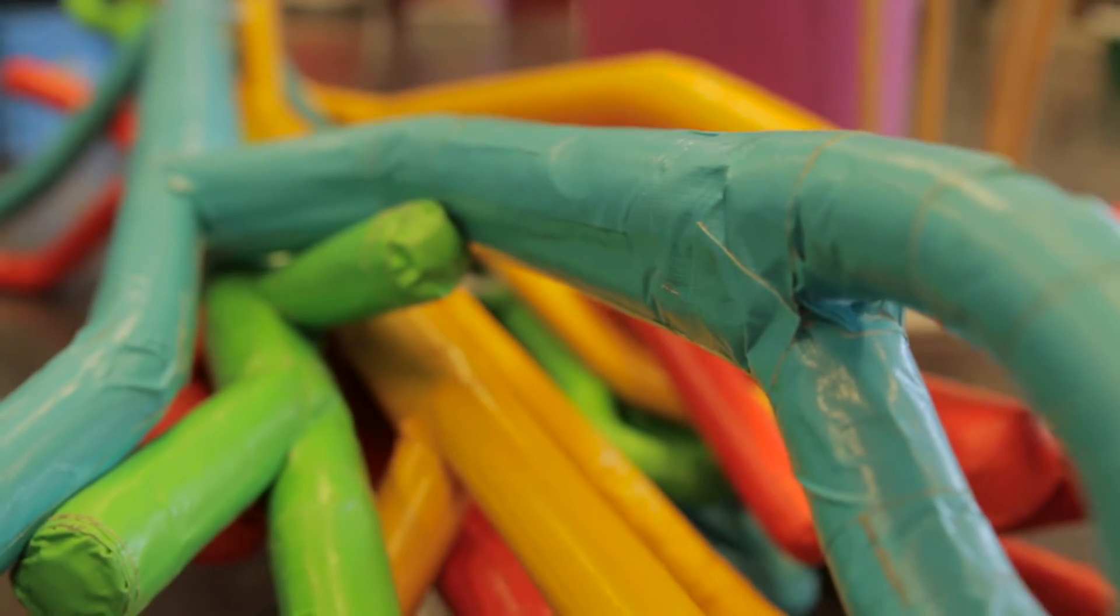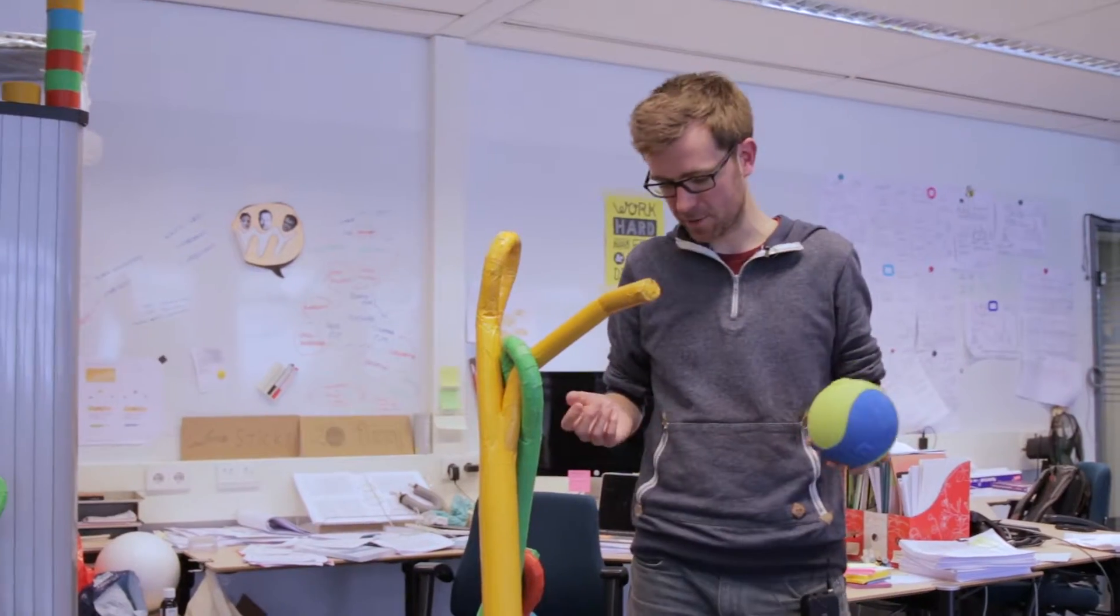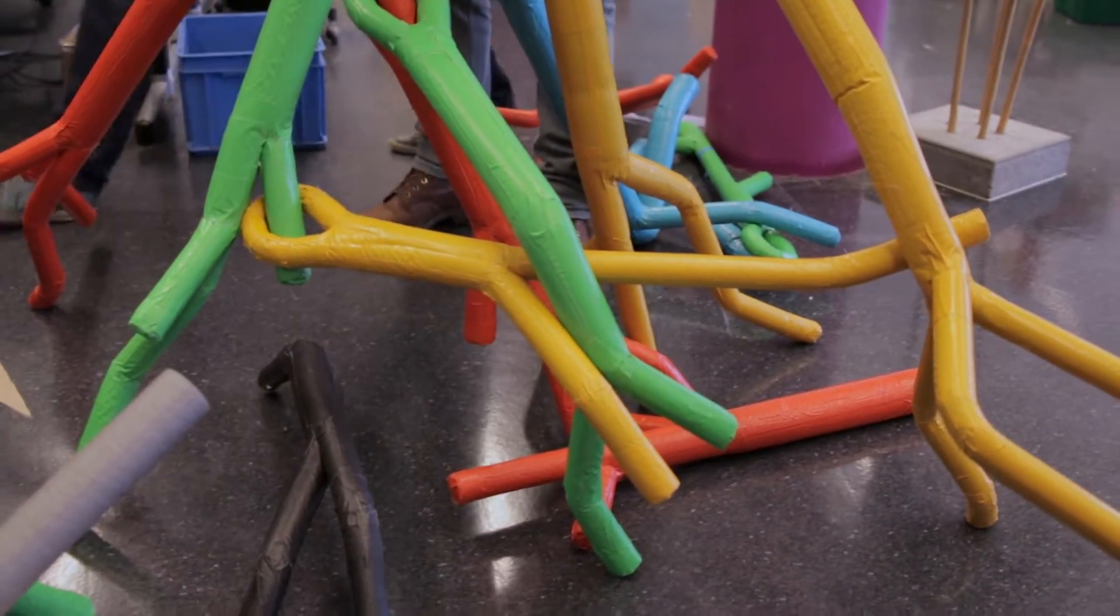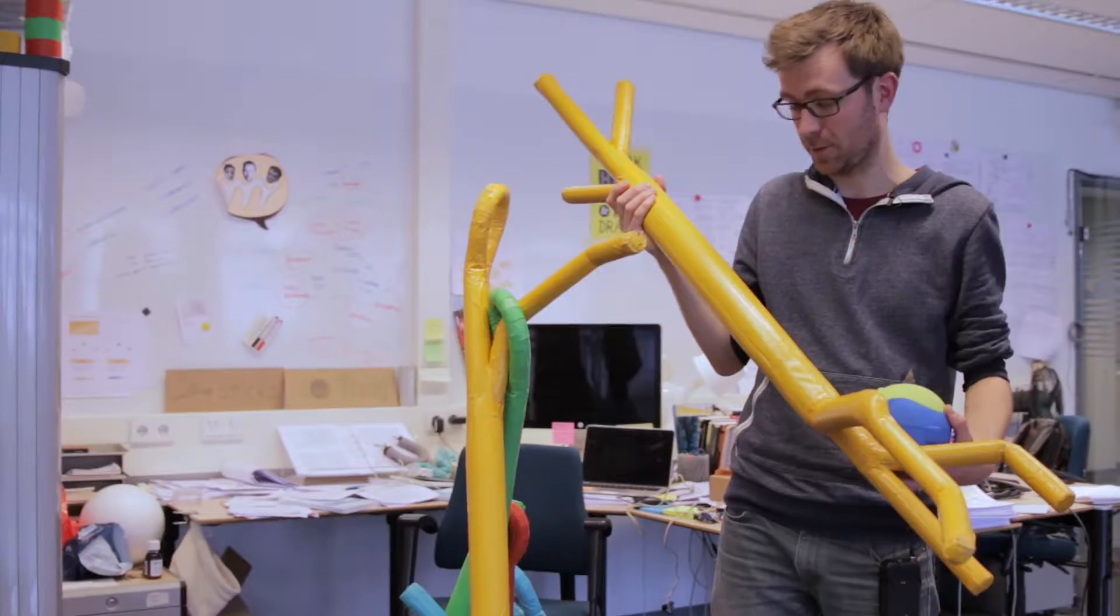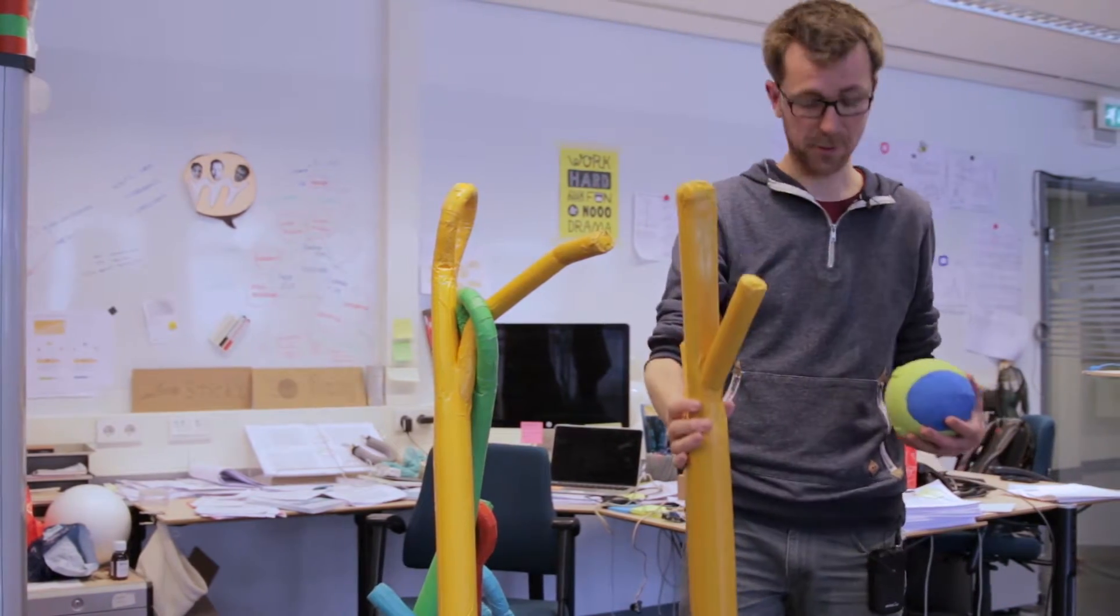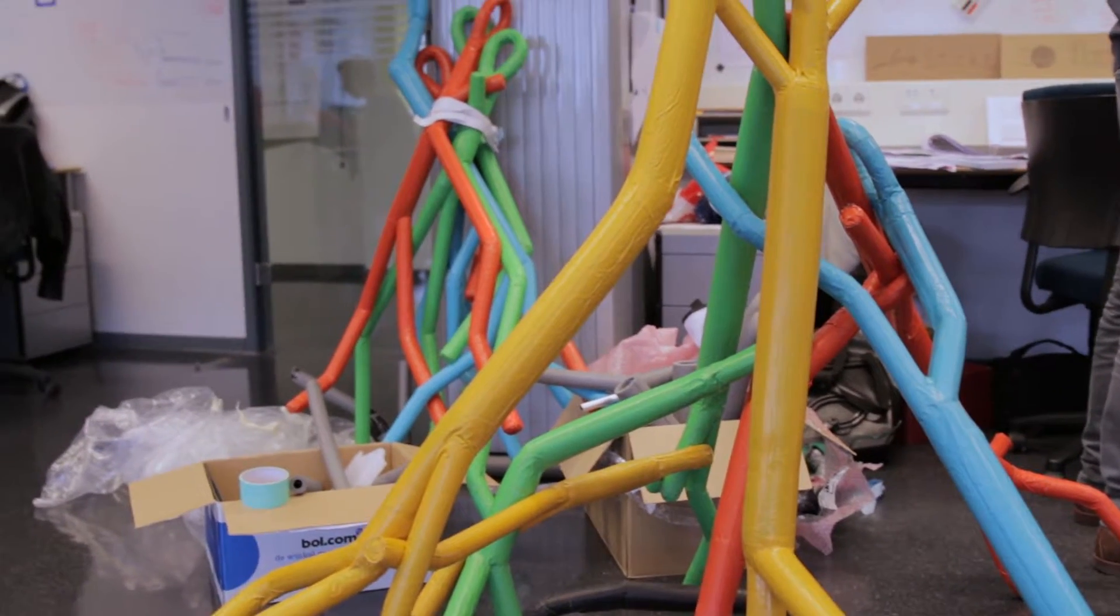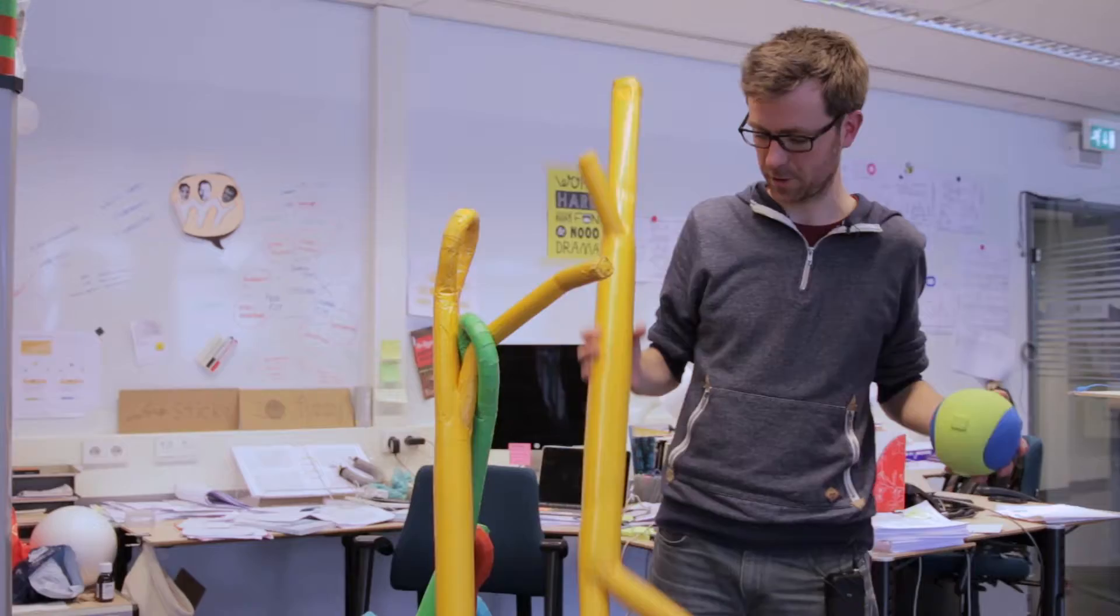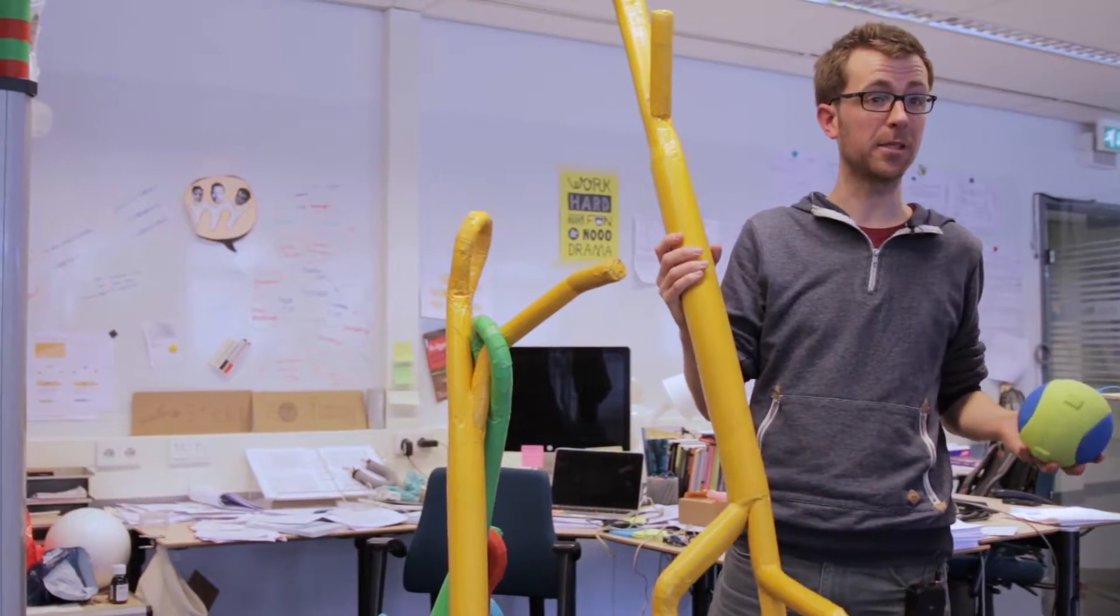I have two main prototypes now, two design directions. These are sticks, basically inspired by the sticks you find in a forest. When children play with those, they drag them around, build, and use them as swords. The different shapes, the weird shapes and the colours are also a way to trigger their imagination.